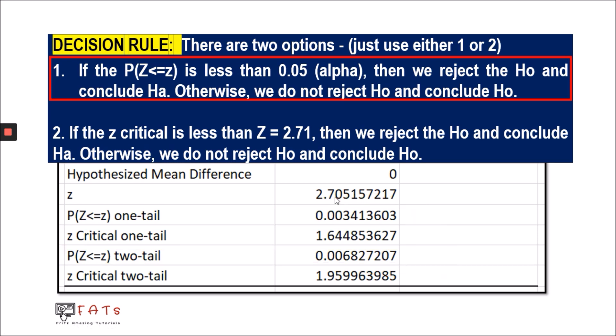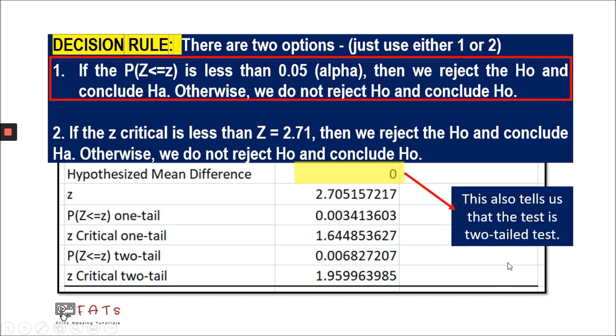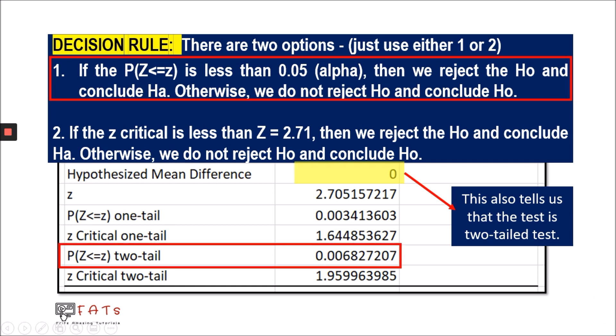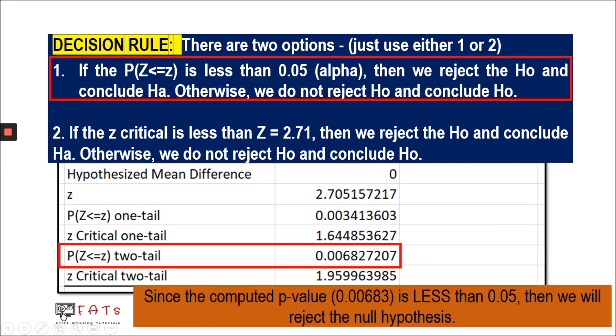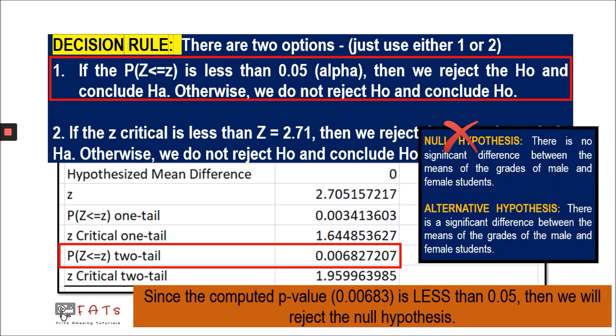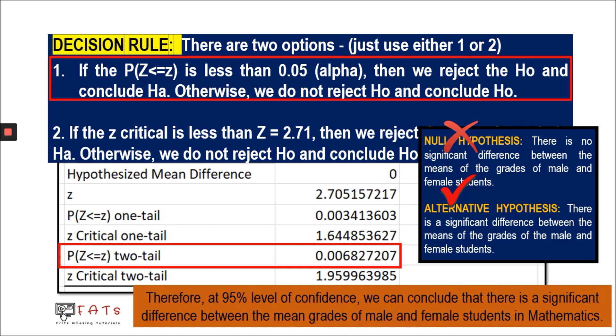For validity purposes, we have to select an appropriate p-value to compare to 0.05. Going back to the hypothesized mean difference of zero, this value also tells us that the test is two-tailed. Therefore, we will be using the p-value for the two-tail test, which is 0.006. Since the computed p-value is less than 0.05, we reject the null hypothesis and conclude the alternative hypothesis. At the 95% level of confidence, there is a significant difference between the mean grades of male and female students in mathematics, and the male group performed better than the female group.